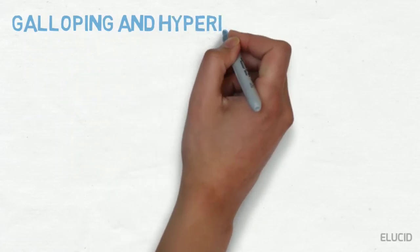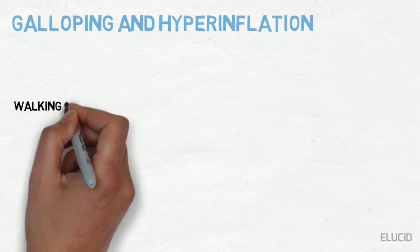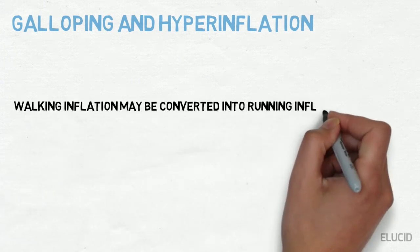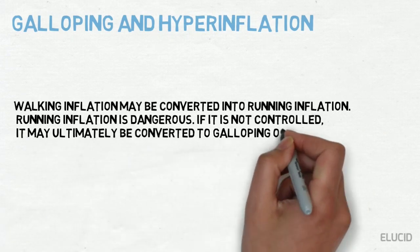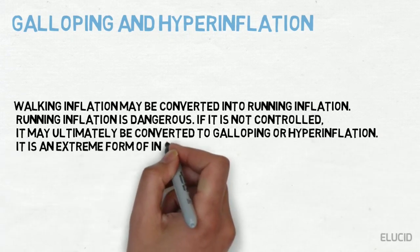Galloping and hyperinflation. Walking inflation may be converted into running inflation. Running inflation is dangerous. If it is not controlled, it may ultimately be converted to galloping or hyperinflation.